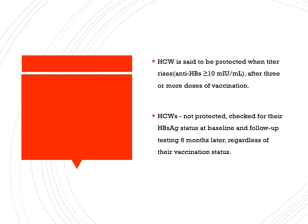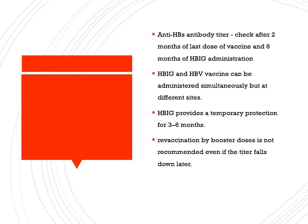For healthcare workers, if the antibody titer is more than 10, they are considered protected. If not protected, status check and follow-up testing at 6 months is needed, along with anti-HBs antibody titer check after two months of the last vaccine dose and six months after HBIG administration. Immunoglobulin and the vaccine can be given at the same time but at different sites. The immunoglobulin provides temporary protection.